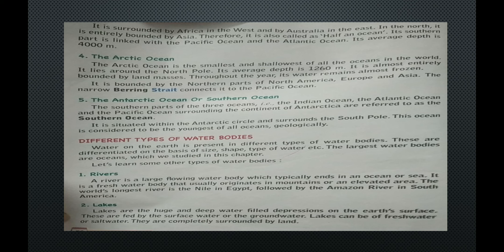Water on the earth is present in different types of water bodies, differentiated on the basis of size, shape and type of water. The largest water bodies are oceans. A river is a large flowing water body which typically ends in an ocean or sea. It is a freshwater body that usually originates in mountains or an elevated area. The world's longest river is the Nile in Egypt, followed by the Amazon River in South America.